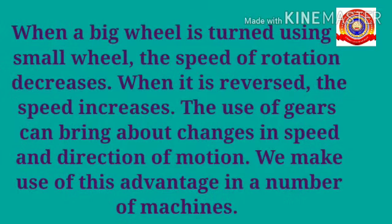When a big wheel is turned using a small wheel, the speed of rotation decreases. When it is reversed — that means when a small wheel is turned using a big wheel — the speed of rotation increases. The use of gears can bring about changes in speed and the direction of motion. We make use of this advantage in a number of machines.